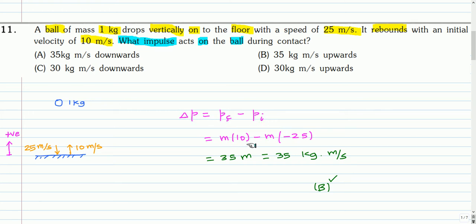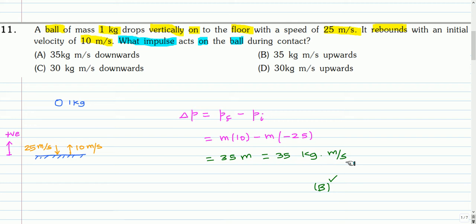Final momentum is mass times the final velocity, that is 10. We are taking the upward direction as positive. The initial velocity is minus 25, because it is in the downward direction. The change in momentum is 35 times the mass. Mass is 1 kg, so it is 35 kg·m/s. It is positive, so it is in the upward direction. The correct option is option B.